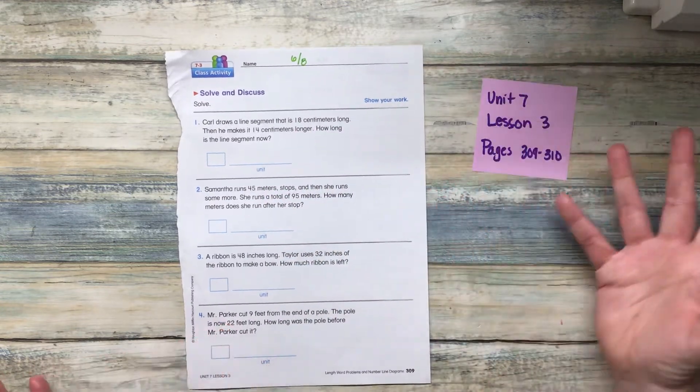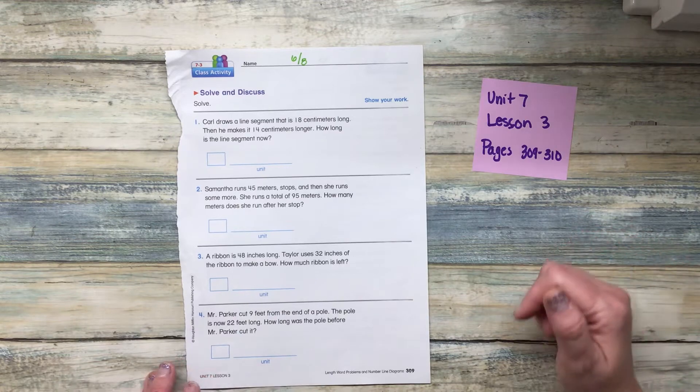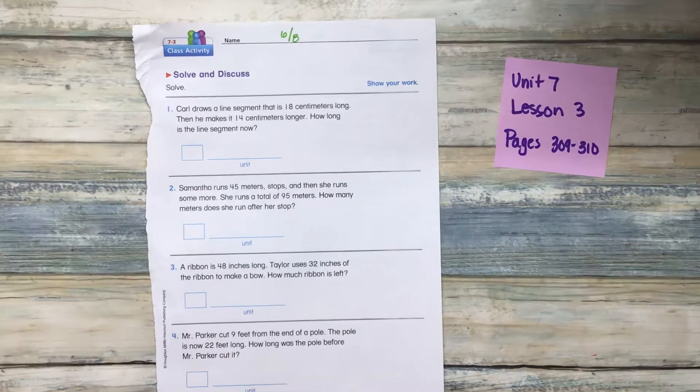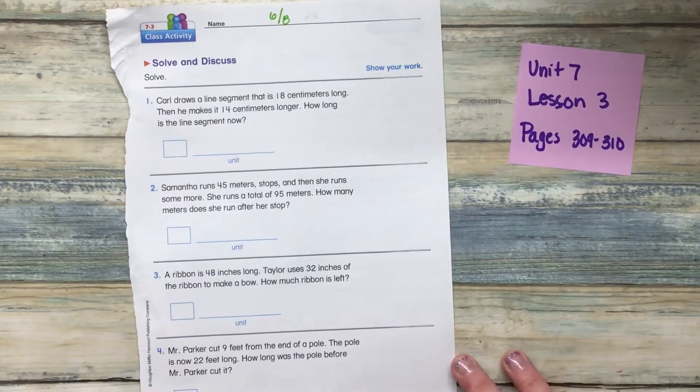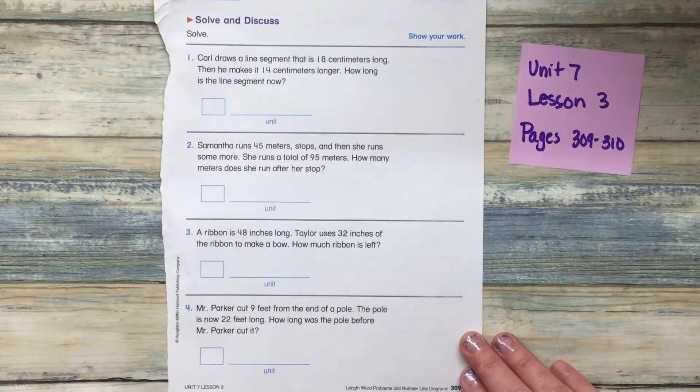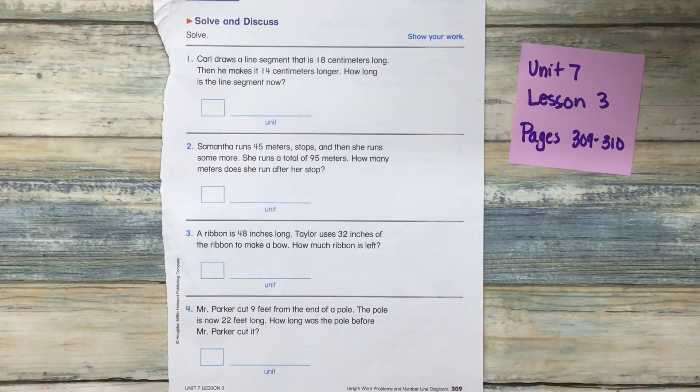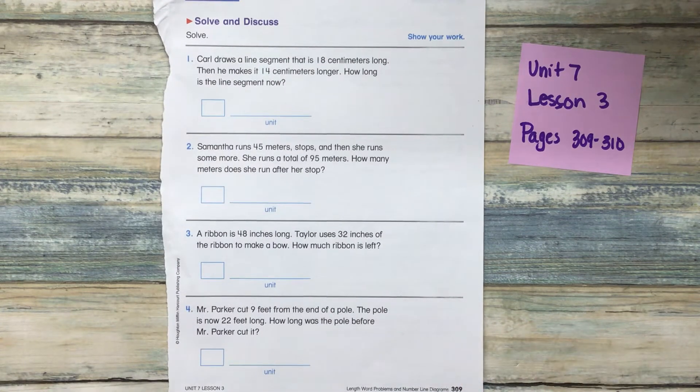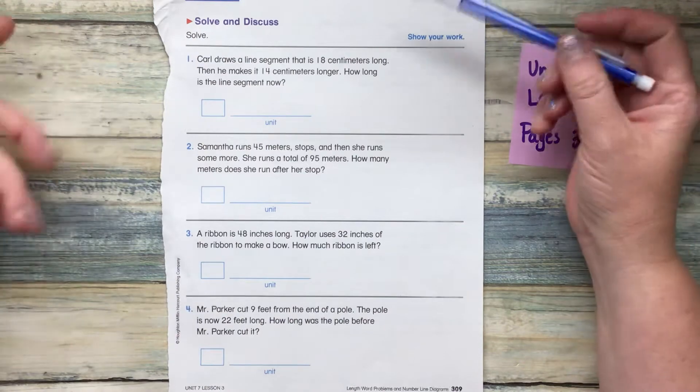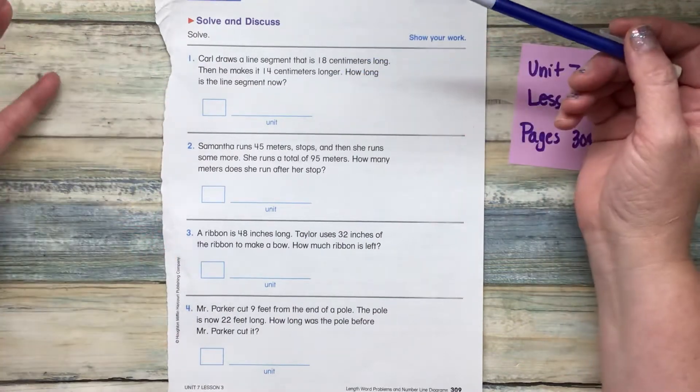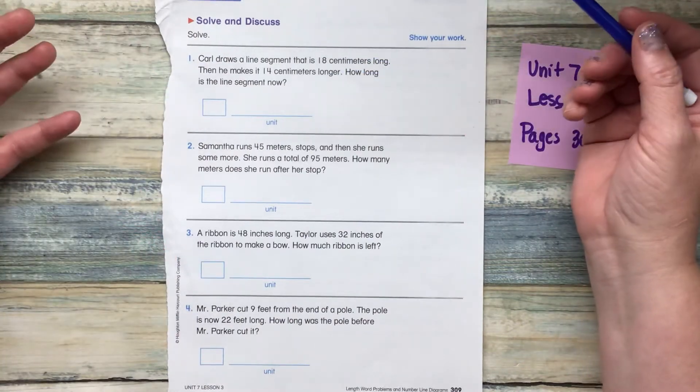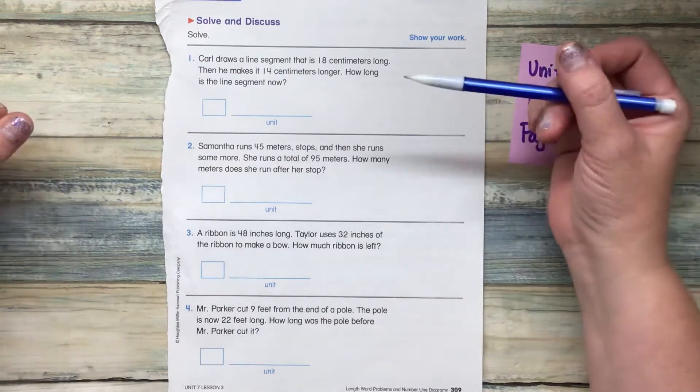And we are just back to basics today. We are just working on some basic problem solving. We just happen to be using measurement instead of apples or animals or whatever. So we're working with numbers like 18 and 14 and we just have to figure out if we are adding or subtracting.